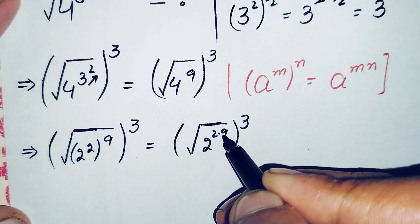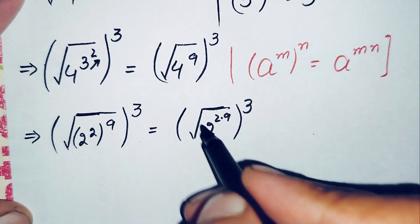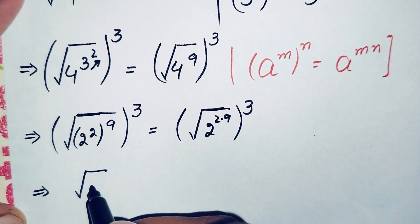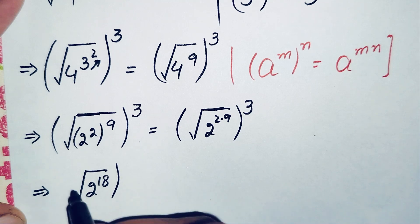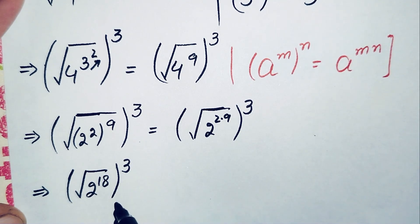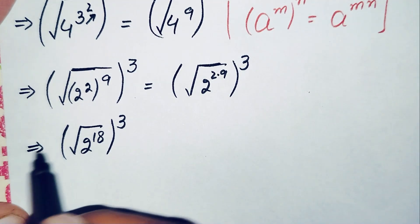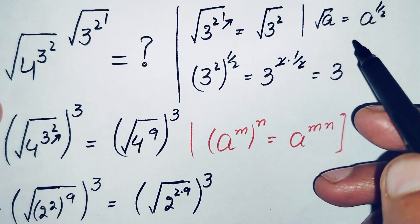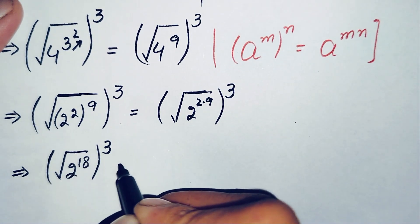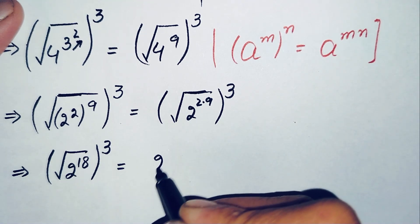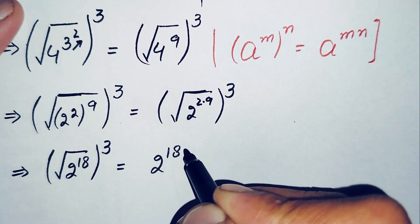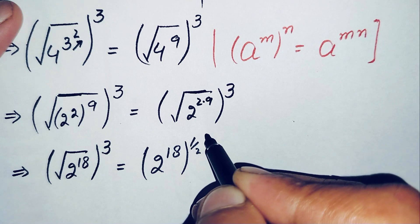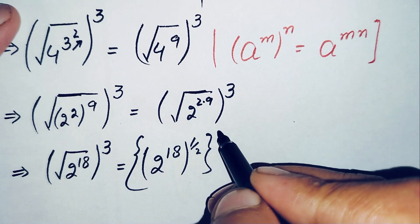Now what is the value of 2 times 9? It is 18. So the equation becomes the square root of 2 raised to power 18, whole raised to power 3. In the next step we change this square root to its equivalent value of 1 over 2, as we did earlier. So this becomes 2 raised to power 18, raised to power 1 over 2, raised to power 3.